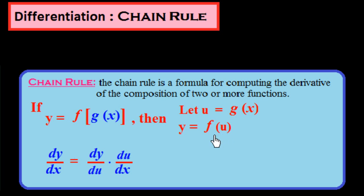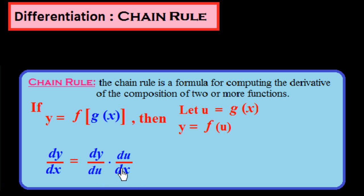Now we apply the chain rule. If we have to find out the derivative of y, then dy over dx is equal to dy over du. First, we differentiate this function with respect to u, then we differentiate u with respect to x and multiply these two. So it would be: dy over dx is equal to dy over du into du over dx.